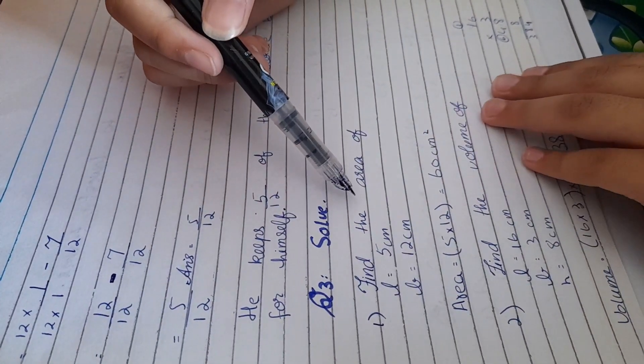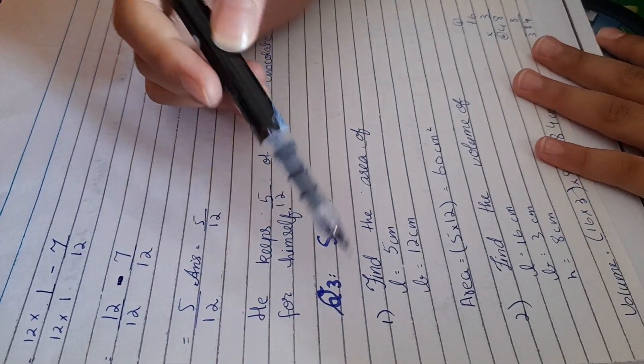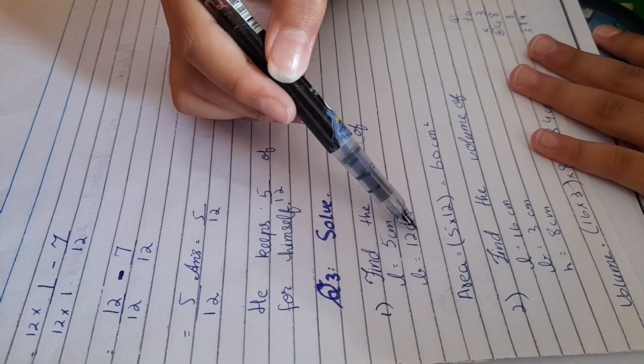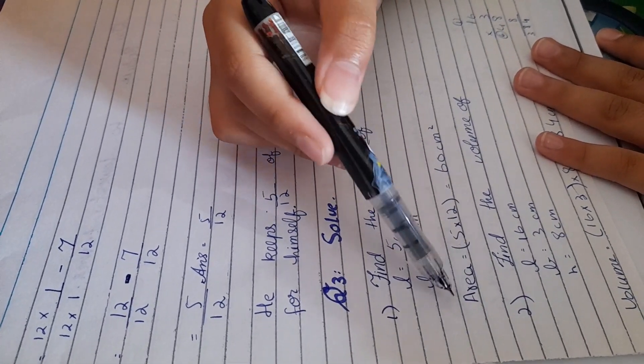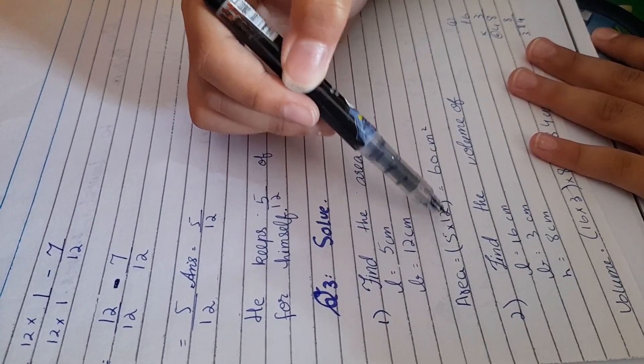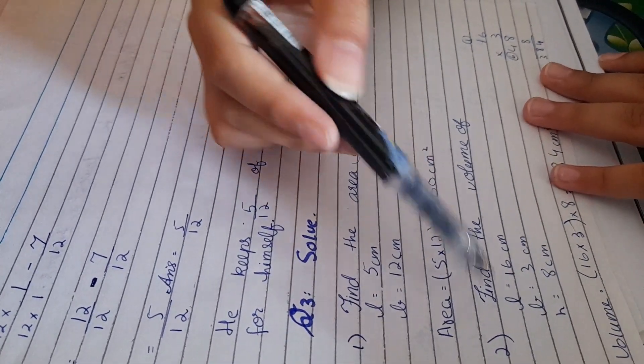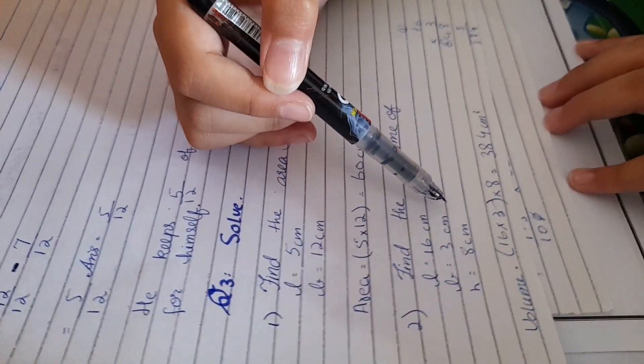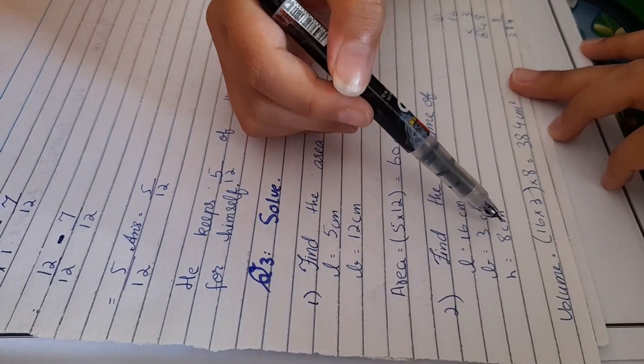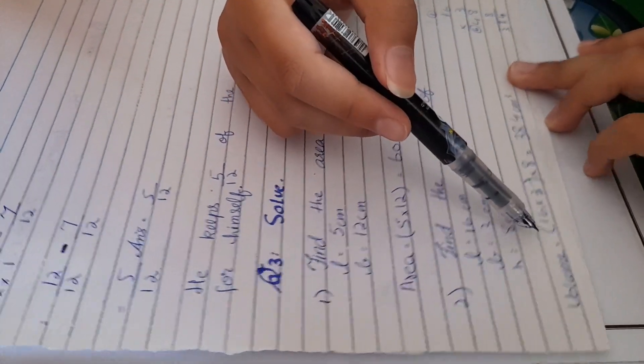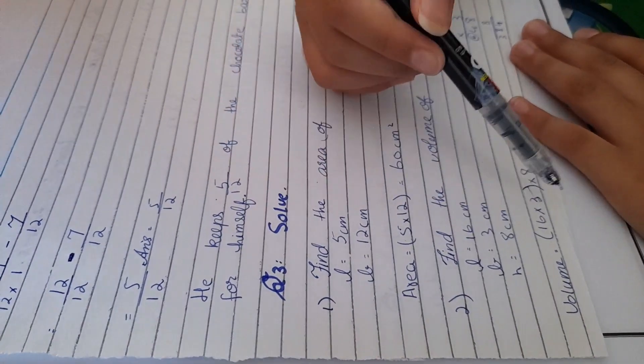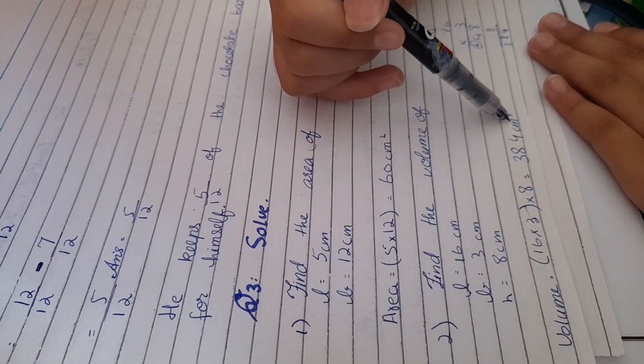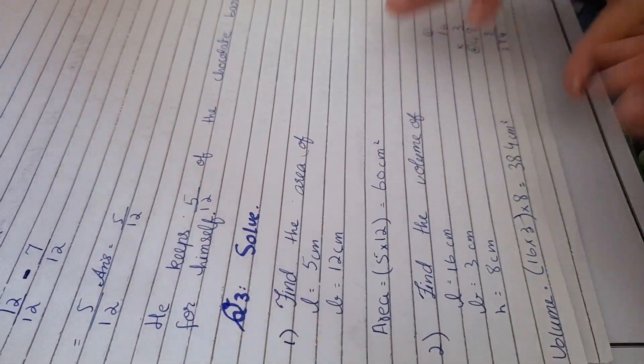Then we have question number 3. We have to find the area. We have given the length and the breadth, the length is 5 cm and the breadth is 12 cm. Area equals length multiplied by breadth. So we will do 5 multiplied by 12 equals 60 cm squared. Next, we have the second one. Find the volume of length 16 cm, breadth 3 cm, height 8 cm. Volume equals length multiplied by breadth multiplied by height. So we will do 16 multiplied by 3 multiplied by 8, that equals 384 cm cubed.